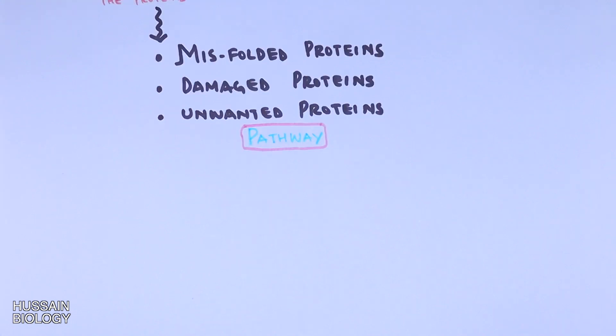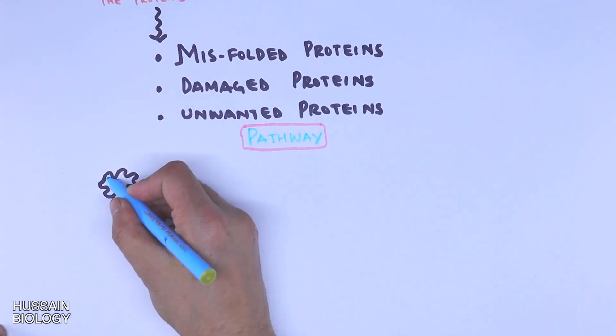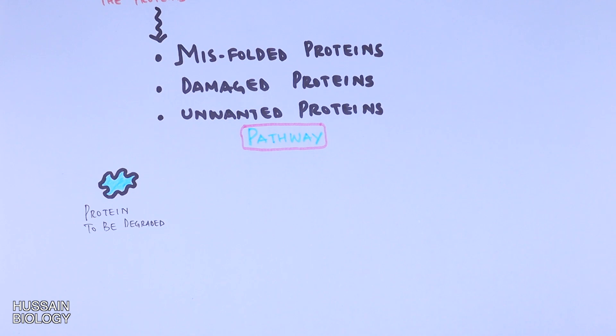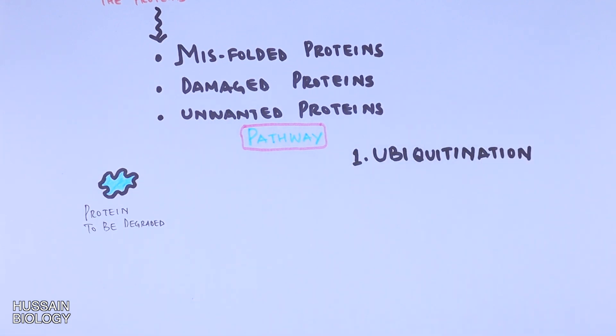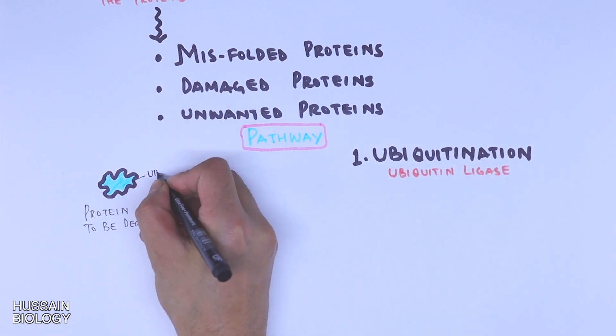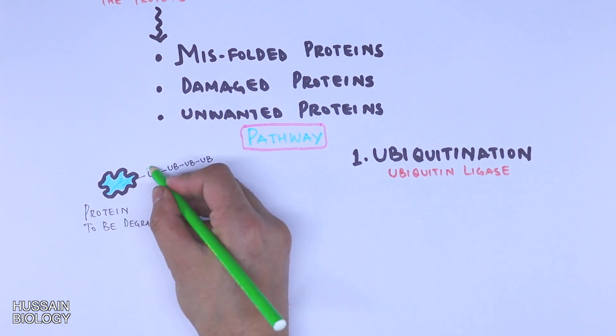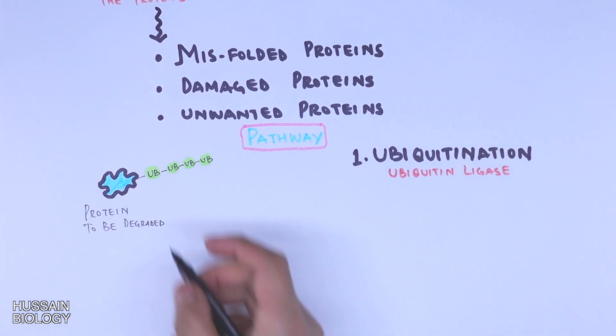If we look at the simple pathway of degradation, we have the protein molecule which is to be degraded. On this target protein, first of all the ubiquitination occurs which is mediated by the ubiquitin ligase enzyme. It adds ubiquitin residues to the protein, thereby marking the target protein for degradation. Here in the diagram we can see the ubiquitin molecules attached to the target protein.